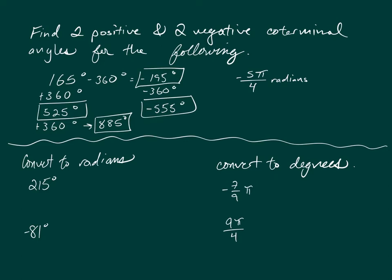With radians it's a little different — you can't add 360 to negative 5π/4 because the units don't match. Instead, you add 2π radians, which is equivalent to 360 degrees. Since 2π doesn't share the same denominator as 5π/4, you convert it to 8π/4, because doubling the denominator gives the numerator: 8 divided by 4 is 2, so 8π/4 simplifies to 2π.